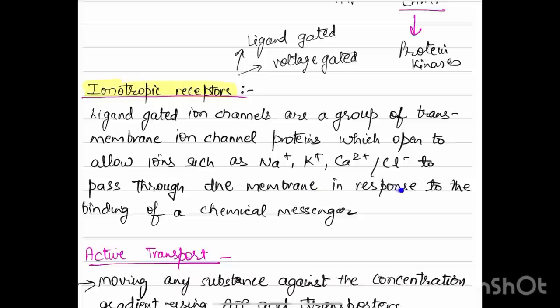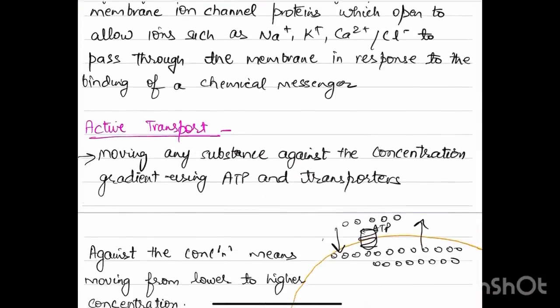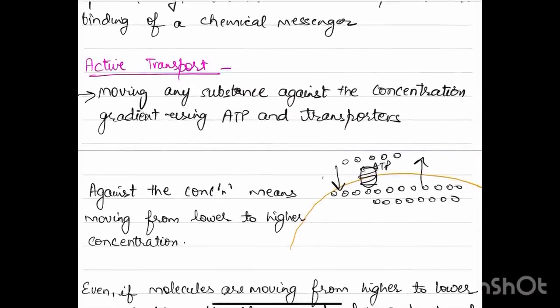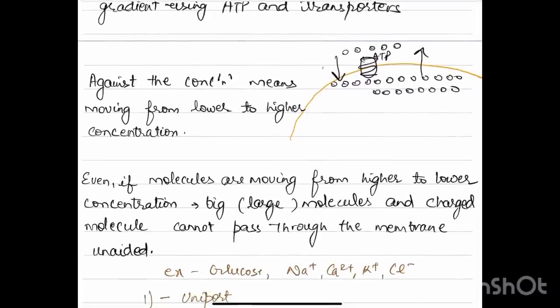Active transport, in which substances move against the concentration gradient using ATP and transporters, is usually used for molecules when we need to transport them against the concentration gradient, that is moving from lower to higher concentration.